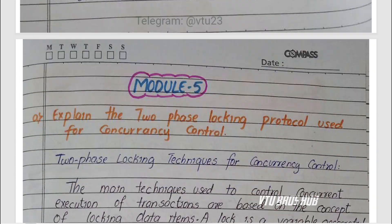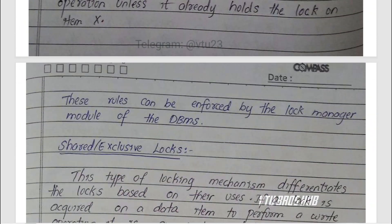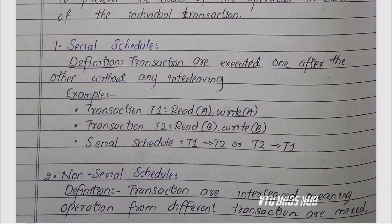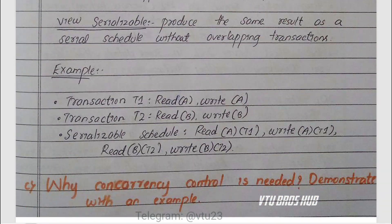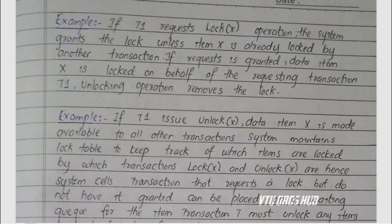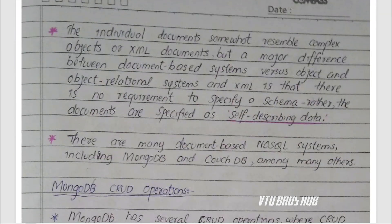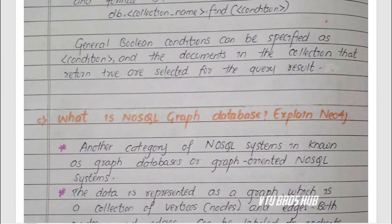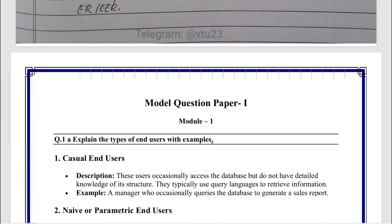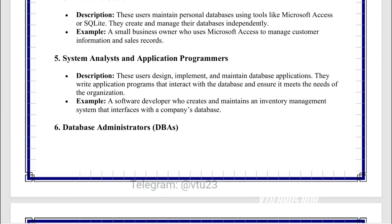Let's take model paper 1. Q1: define DBMS and explain its advantages. Here, you can write the standard definition and list four points, like reduced redundancy, data integrity, data independence, and multi-user access. Add an example like a student database, and a small diagram if you have time. Repeat for a few key questions from model 1 and model 2 — don't read all questions, just highlight patterns.